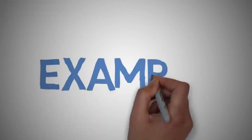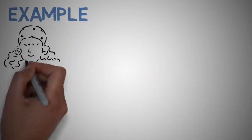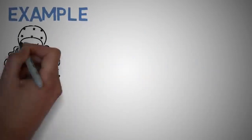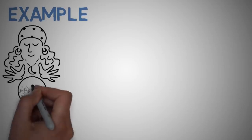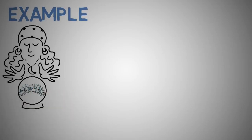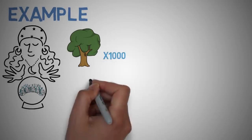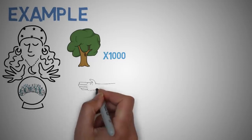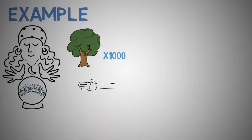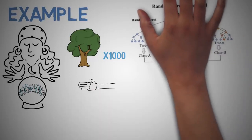So to perform the predictions using the trained random forest algorithm, we need to pass the test features through the rules of each randomly created tree. Suppose we formed a thousand random decision trees to form the random forest. Say we are detecting if an image contains a hand. Each random forest will predict a different outcome or class for the same test feature.